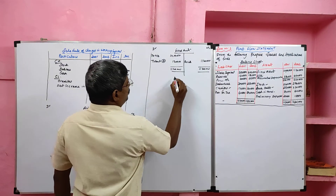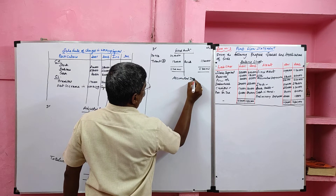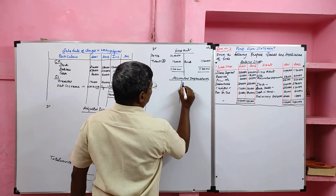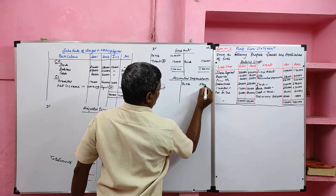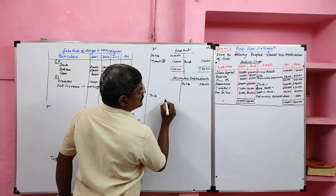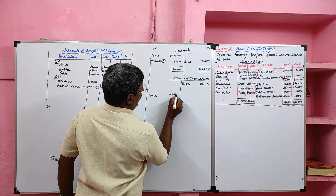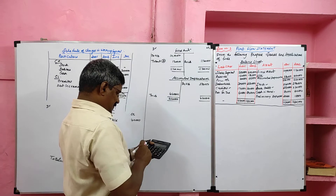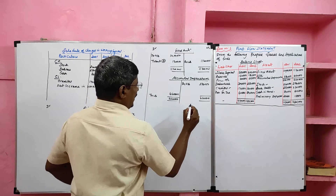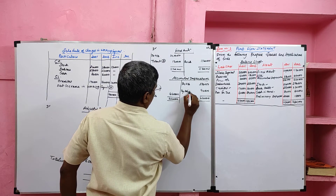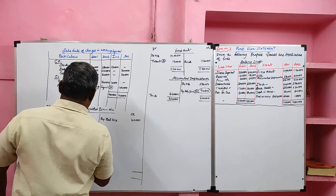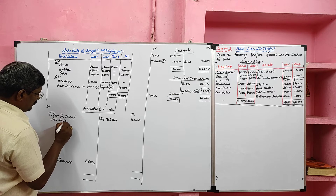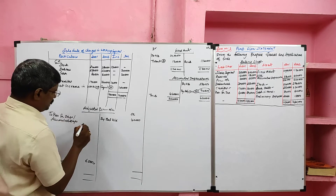Next, we prepare the accumulated depreciation ledger account. Accumulated depreciation is a liability, so the opening balance is credited. Opening balance is 3 lakh 70 and closing balance is 4 lakh 60. The accumulated depreciation increased, so it should be transferred to the adjusted profit and loss account. 4 lakh 60 minus 3 lakh 70 equals 90,000, which should be transferred to the adjusted P&L account debit side as provision for depreciation or accumulated depreciation.